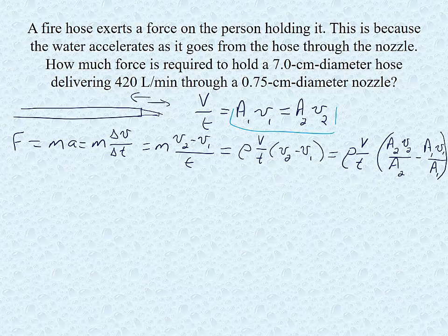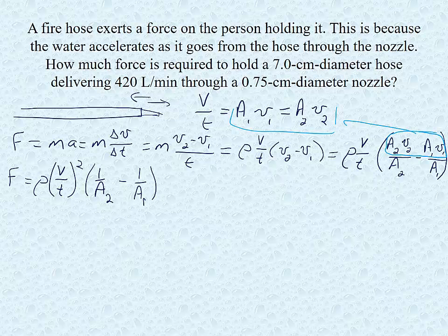In particular we know that a1v1 equals a2v2. So we can pull that out, the a2v2 minus a1v1 we can pull that out and we can put it in terms of v over t and we can then say that the force is rho v over t squared times 1 over a2 minus 1 over a1. So again this sleight of hand here allows us to take a fairly complicated numerator and set them to be the same and then say well that's really just a v over t and pull that out of our multiplication.